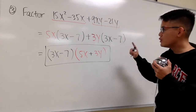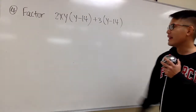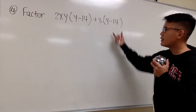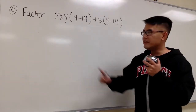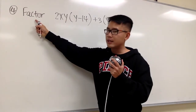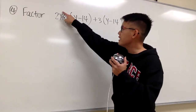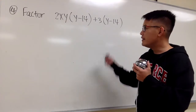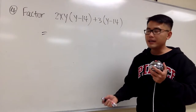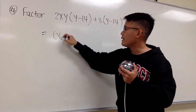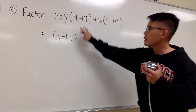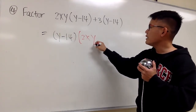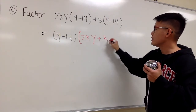Now let's check out the next example. Here we technically only have two terms: 2xy times (y minus 14), plus 3 times (y minus 14). The contents inside both parentheses are exactly the same. The direction says to factor as much as possible, so do not multiply anything in — we are factoring, not expanding. Since both terms share (y minus 14), we factor it out first and write it down once: (y minus 14). Then the left over is 2xy from the first term plus 3 from the second term. The answer is (y minus 14)(2xy plus 3).